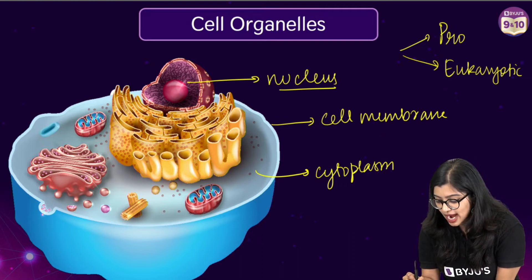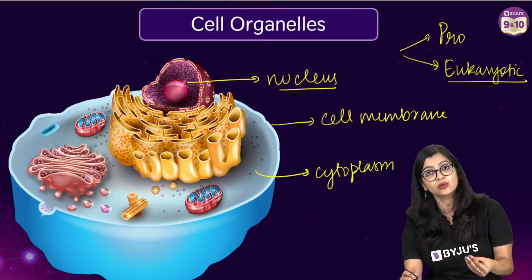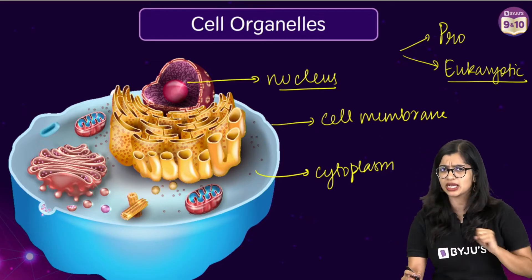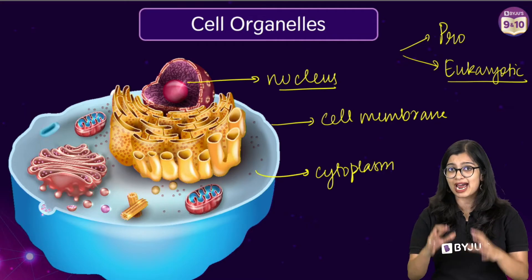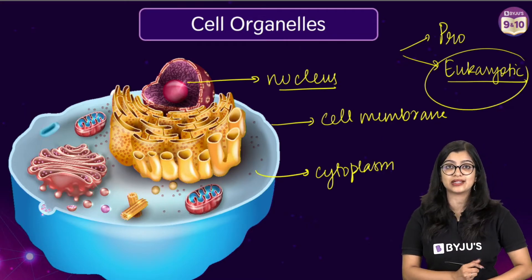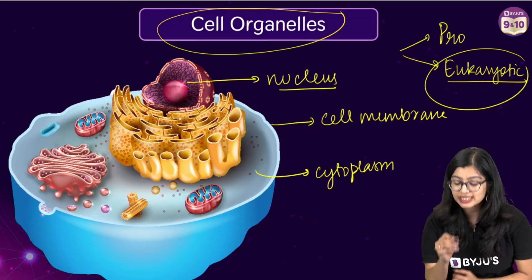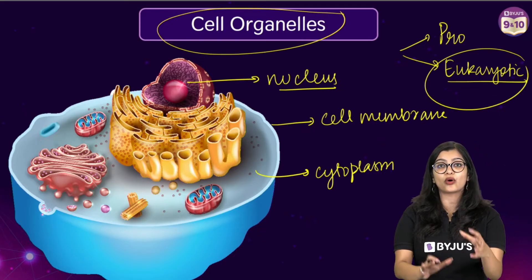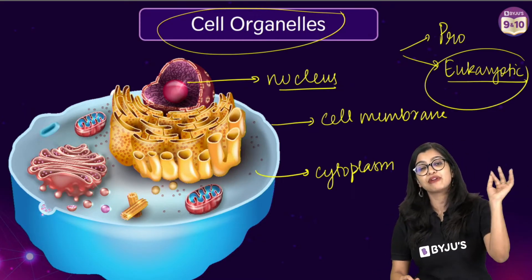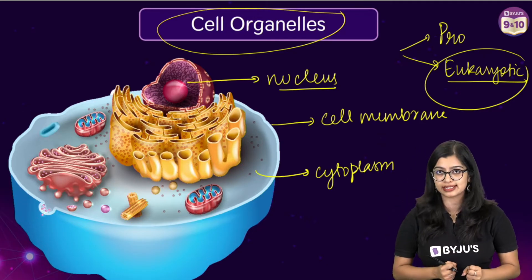Eukaryotic cells are those cells which have a well-defined nucleus. Now apart from this being a differentiating character, we also see that eukaryotic cells tend to have membrane-bound cell organelles. This is a very important feature of eukaryotic cells.